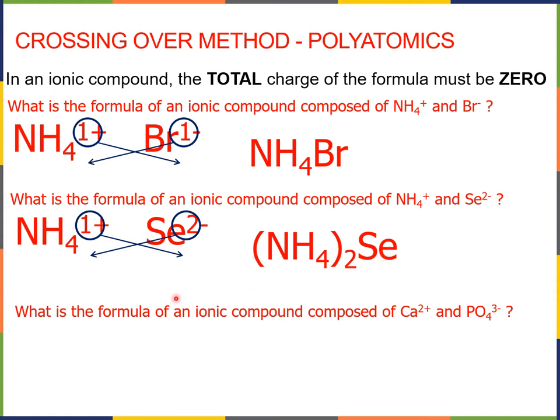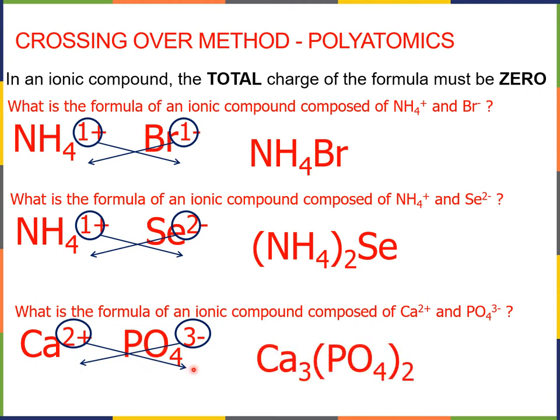Okay, one more. What is the formula of an ionic compound composed of calcium plus 2 and phosphate 3 minus? Again, write out the ions with the charges, do our crossing over, and what we result in is calcium 3 phosphate 2. And just like the example ammonium selenide, we get calcium 3 and (PO4) parentheses 2, giving us Ca3(PO4)2.